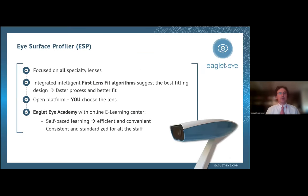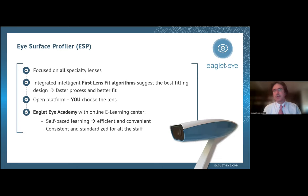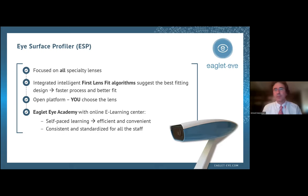In a nutshell, the iSurface Profiler is focused on all specialty lenses — whether soft, RGP, hybrid, or scleral. The device has developed a number of first-lens-fit algorithms. It's an open platform so you're always in control. We've also developed an online e-learning academy — a useful, easy-to-use tool to ramp up your knowledge of taking great measurements, so you'll be able to measure proficiently and get great results fitting the Maxim 3D.